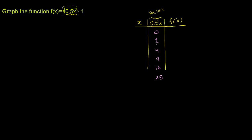If those are what 0.5x equals, what is x going to be? If 0.5x is 0, then x is 0. In general, to get x we take the 0.5x value and divide by 0.5, or equivalently multiply by 2. So when 0.5x is 1, x is 2; when 0.5x is 4, x is 8; when 0.5x is 9, x is 18; when 0.5x is 16, x is 32; and when 0.5x is 25, x is 50.